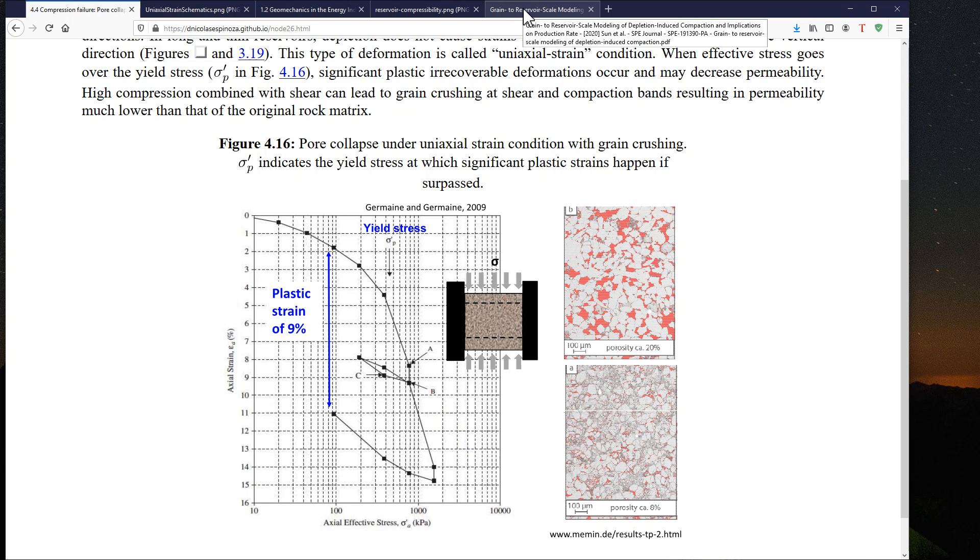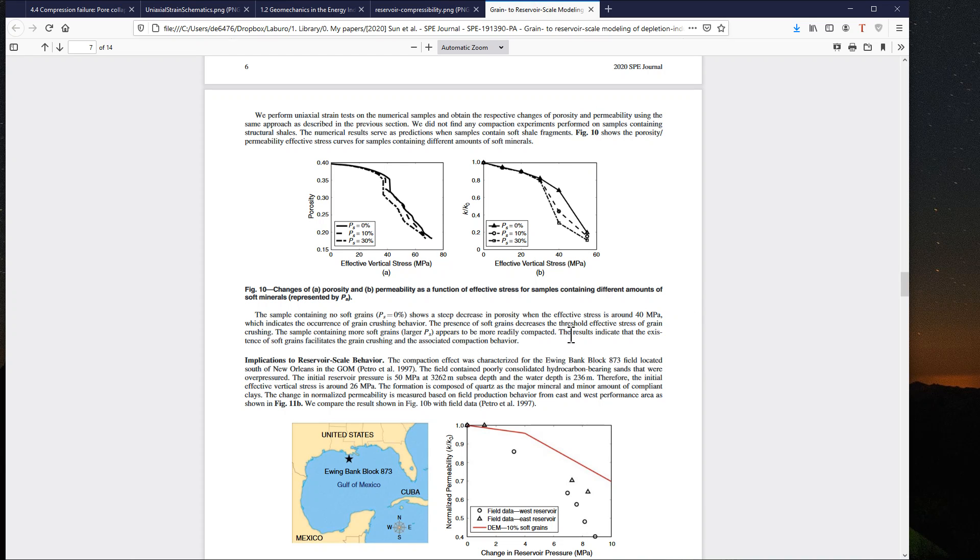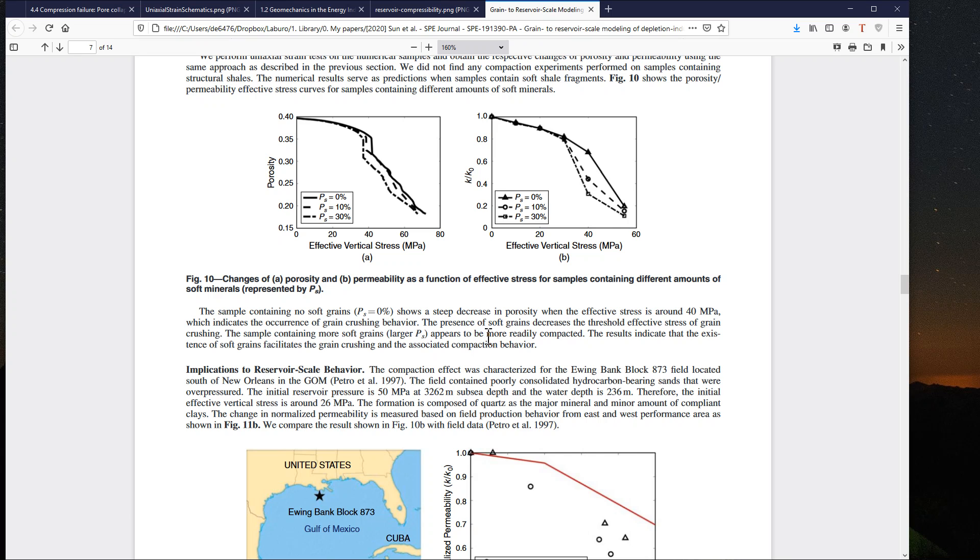Here let me show an example about such a case. This is a study we did for a reservoir in the Gulf of Mexico, where you can see that as the effective vertical stress increases due to the decrease in pore pressure, the porosity decreases, and also permeability decreases. In some of these cases, the decrease in permeability was so much that it would go to up to 20% of the original permeability, which is quite a bit.